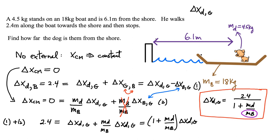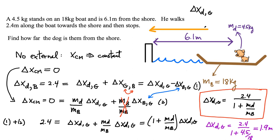In our case the mass of the boat is only 18 kg, so we substitute the numbers in. The displacement of the dog relative to the ground equals 2.4 divided by (1 + 4.5/18), which gives approximately 1.9 meters. Since the dog started 6.1 meters away from the shore, subtracting 1.9 meters means he ends up about 4.2 meters away from the shore.